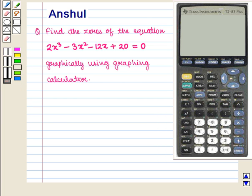Hello and welcome to the session. In this session we are going to discuss the following question: Find the zeros of the equation 2x³ - 3x² - 12x + 20 = 0 graphically using a graphing calculator.